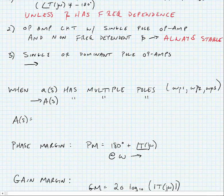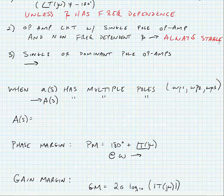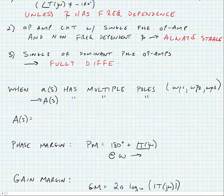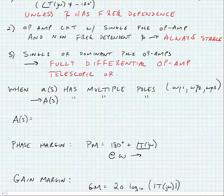A few examples of single or dominant pole op amps would be a fully differential op amp — we haven't looked at this yet, but if instead of using a current mirror load we were to use an active load, we would have a fully differential op amp with a single pole. Another example would be a telescopic or a folded cascode, where one of the poles is so dominant that the other pole doesn't cause much interaction.